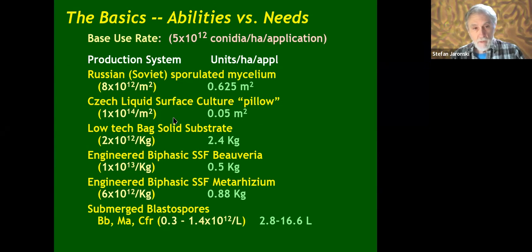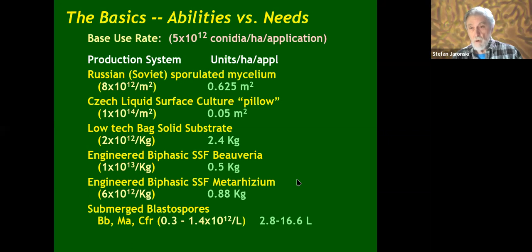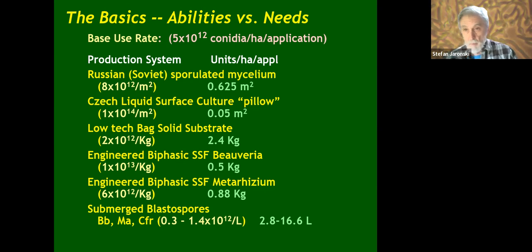The engineered Mycotech system — a system developed at Mycotech, the company I worked with in the 1990s — requires only half a kilogram per hectare. This is the kind of consideration when looking at the best way to approach production. Following these considerations, let's look at some examples. For a US greenhouse market of about 7,300 hectares at 50% penetration, you need this many conidia. For low-technology production you need 18,000 kilograms of substrate. For the high engineered mechanized production, only 3,600 kilograms. For liquid fermentation based on that yield, you need 36,400 liters.